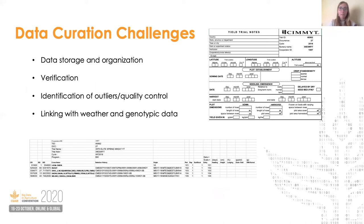The phenotypic data is collected such that collaborators are provided with trial notes forms to fill in information about planting dates, management, etc., and a field book file containing genotype names and space to record agronomic traits. These records are currently available for several IWIN nurseries online with the International Wheat Information System, or IWIS, and also on CIMIT's Dataverse. We're working as a group to curate a high quality dataset of some of the nurseries, addressing challenges related to verifying data correctness, identifying and removing outliers, and linking all phenotypic information with weather and genotypic information.